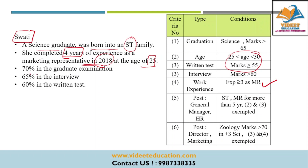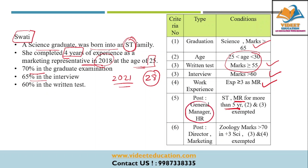She has scored 70% in graduation, which satisfies the marks criteria, 65% in interview, and 60% in written test — all criteria regarding marks, written test, interview, and work experience are satisfied. In 2021, her age will be 25 plus 3, which is 28 years. Even without exemptions she fits the criteria. However, she doesn't have 5 years of experience, so she cannot be chosen for general manager — but Swati will be selected as a marketing officer.